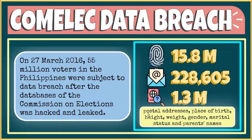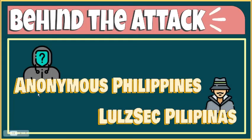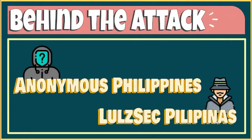Other information contained within the breach included postal addresses, place of birth, height, weight, gender, marital status, and parents' names. Behind the attack was a hacktivist group called Anonymous Philippines. Following the breach, a second hacker group, Lulsec Filipinas, posted the database online, and since then it has been widely shared by others.